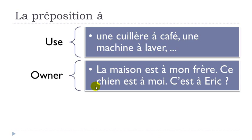Another option is to express ownership. If you want to say 'La maison est à mon frère' — the house belongs to my brother — you use 'être' + À + the noun. You can also use a pronoun: 'Ce chien est à moi' — this dog is mine. Or you can put the person's name: 'C'est à Éric?' — does it belong to Éric? This À is quite commonly used when you want to say that a person owns something.